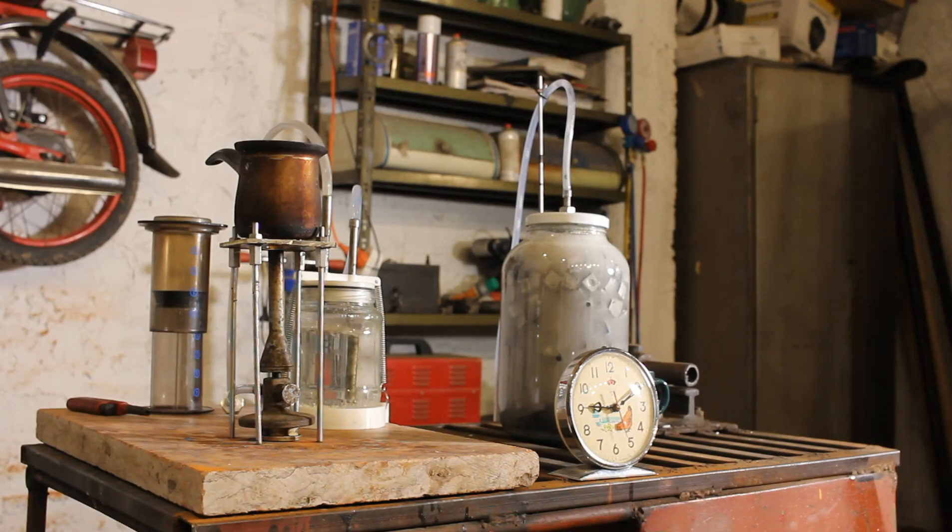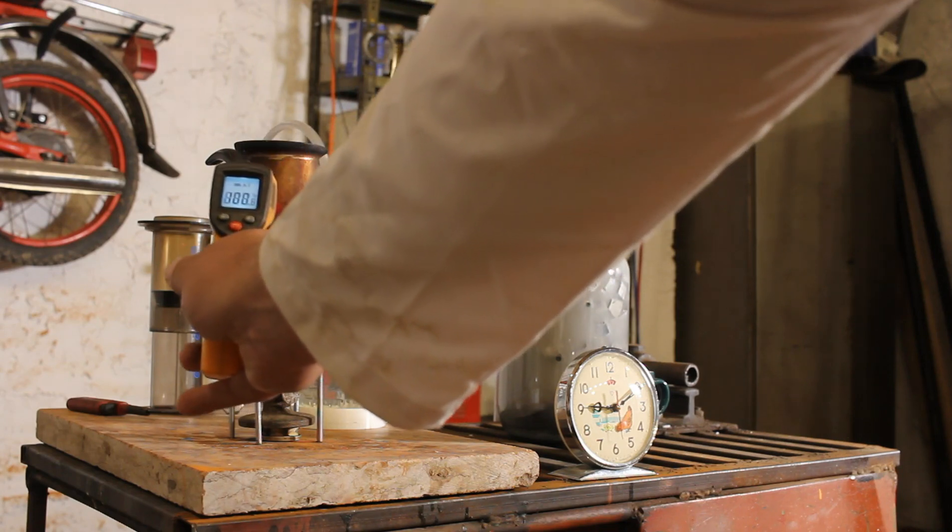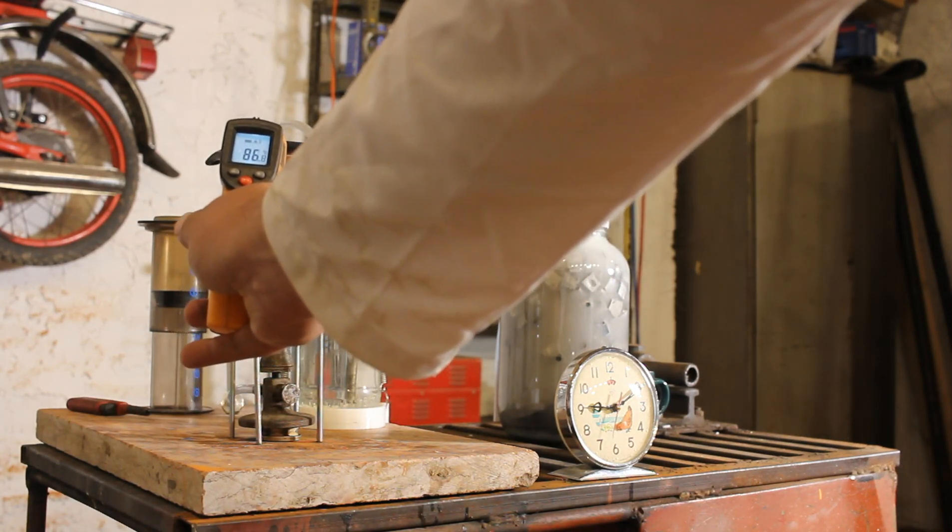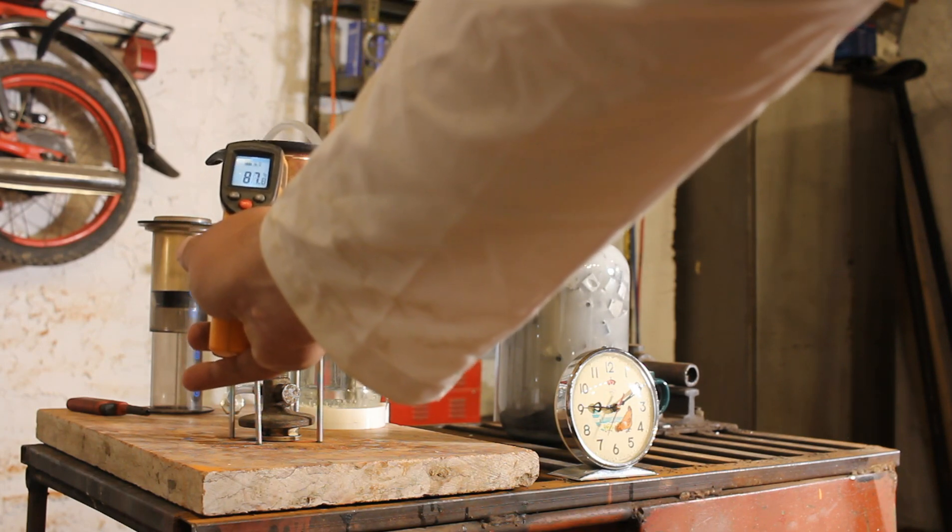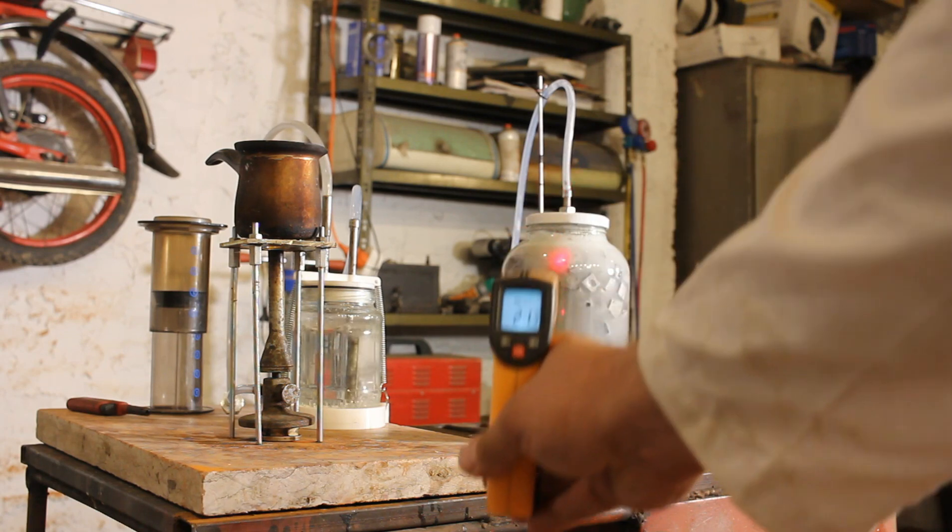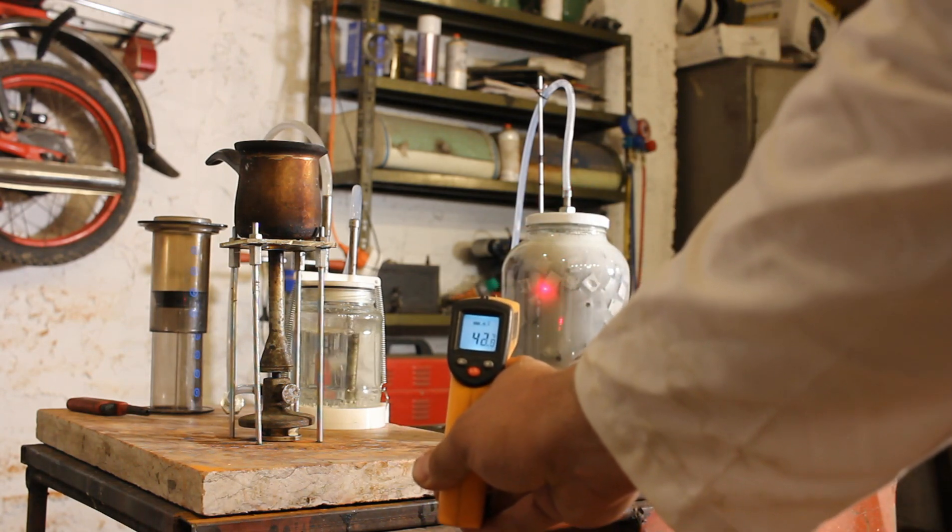32 minutes later the temperature of the kettle is almost 90 degrees centigrade. Nobody said this will be a quick process. The sodium hydroxide jar is at 41 degrees centigrade.